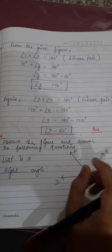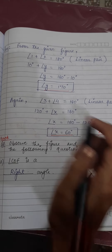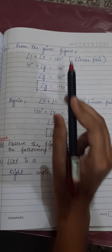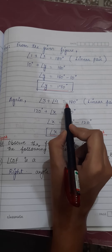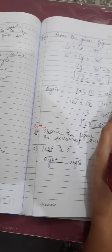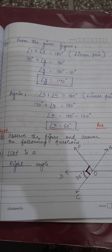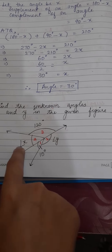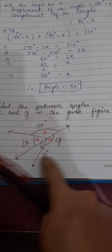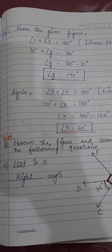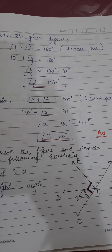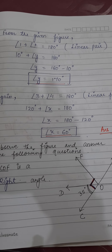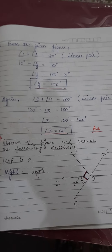Make sure that if you are writing angle 1, angle 2, angle 3, angle 4 in your answer, you draw the figure in the exam and write these names on it. You have to write these names if you are mentioning these angles in your answer.